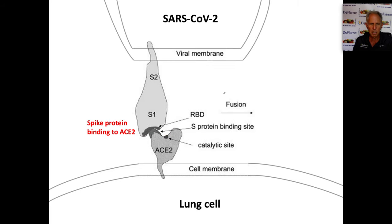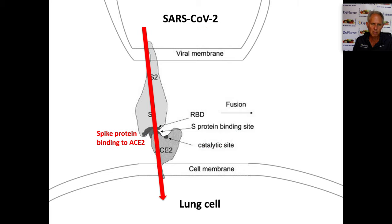From that article, we can see the term spike protein. This is the viral membrane — this is SARS-CoV-2, the coronavirus from late 2019, early 2020. You can see the binding area of the spike protein and its binding site on the enzyme. This is nothing to do with the catalytic site for angiotensin-2. Once SARS-CoV-2 binds to the ACE2 receptor, the virus enters the lung cell.